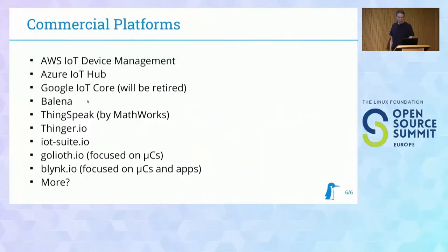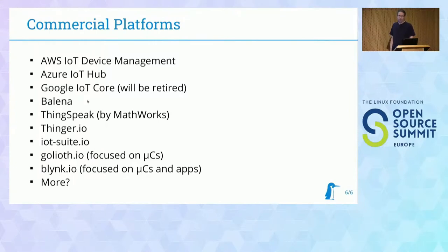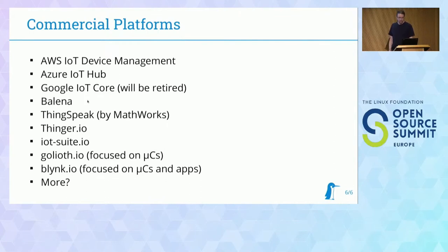Looking at commercial platforms: Google IoT Core is deprecated and will be shut down soon, so even very large providers aren't necessarily safe to rely on. People using that will need to migrate, which will probably be difficult. This is an aspect you need to think about — whether to build on a service that might go away, especially if you're building a product that needs to be maintained for 10 or 15 years. Having something that can be run on your own servers without migration is very relevant in some projects.